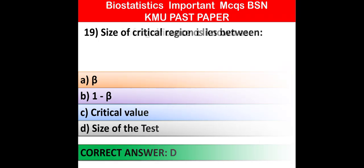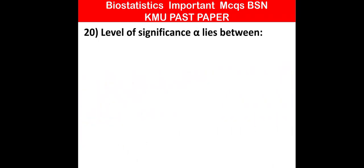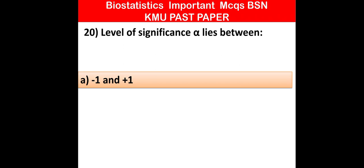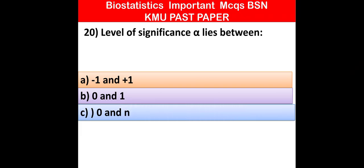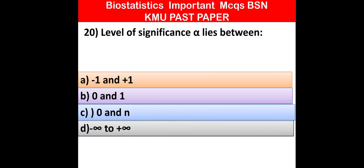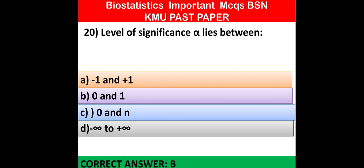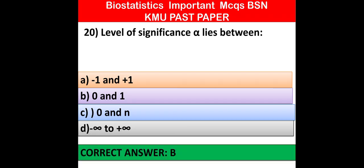MCQ number 20: The level of significance alpha lies between — minus 1 and plus 1, 0 and 1, 1 and infinity, or minus 2 and plus 2. Option B is correct: 0 to 1. Most important — please subscribe and share for more informative videos, specifically for biostatistics postal and exam preparation. Thank you so much for watching.